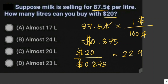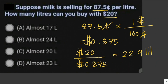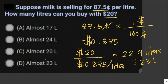The answer is 22.9 liters. Because it says 0.875 dollars per liter, we don't have 22.9 in our choices, so we just have to round off 22.9 to approximately 23 liters. So the answer is letter D.